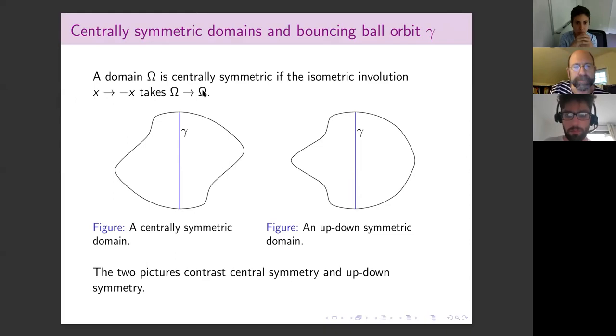A centrally symmetric domain is a domain which is invariant under this isometric involution. Here is an example of a centrally symmetric domain. In both cases, we're drawing an orbit of the billiards, which is called a bouncing ball orbit, because it hits the boundary orthogonally at both endpoints. We want to prove an inverse spectral theorem for such domains. It's similar in nature to an old theorem that if you have an up-down symmetric domain, then a real analytic with a bouncing ball orbit, then it's determined by its eigenvalues among other domains in the same class.